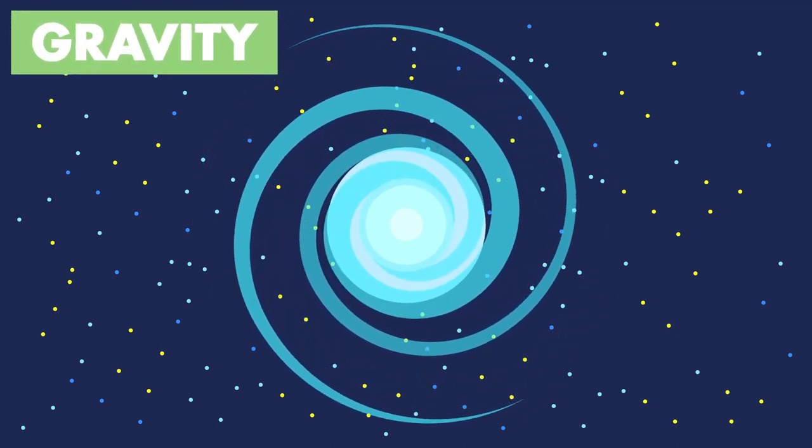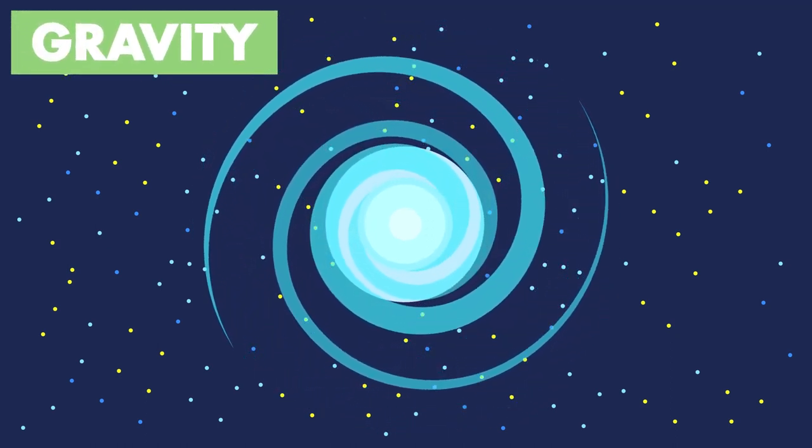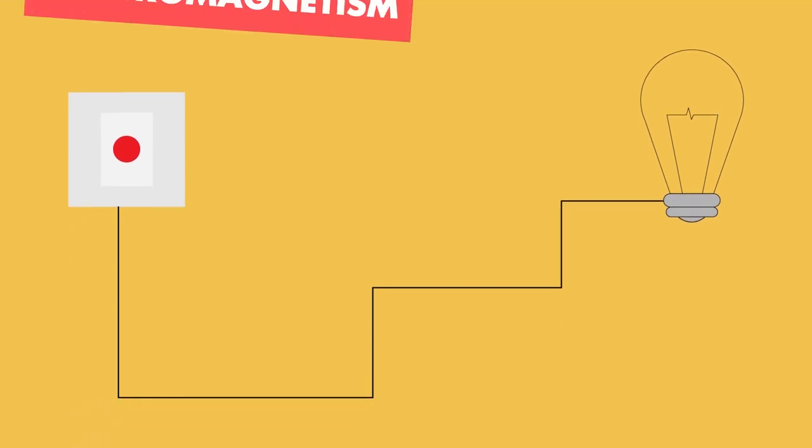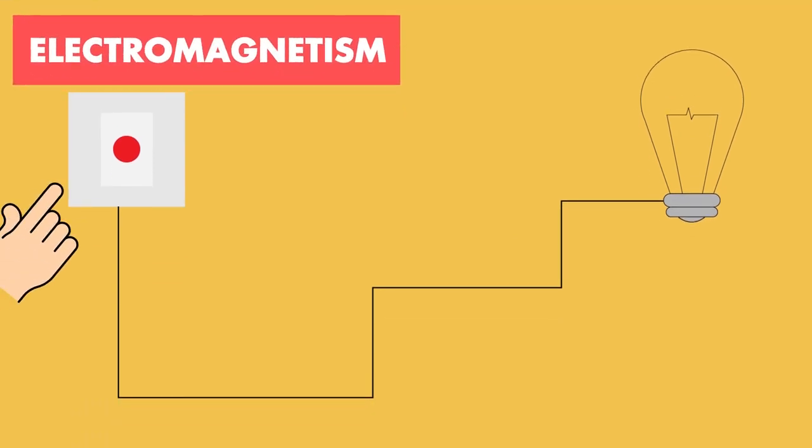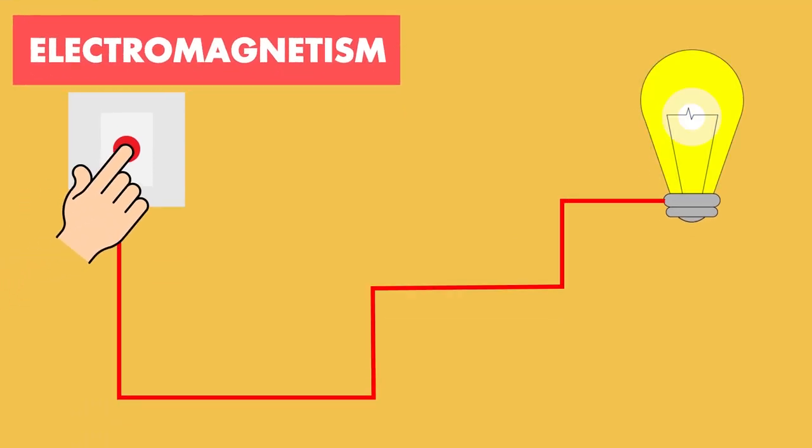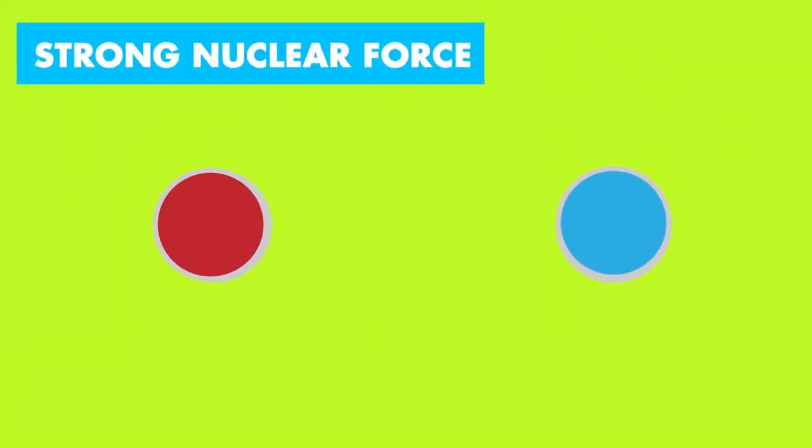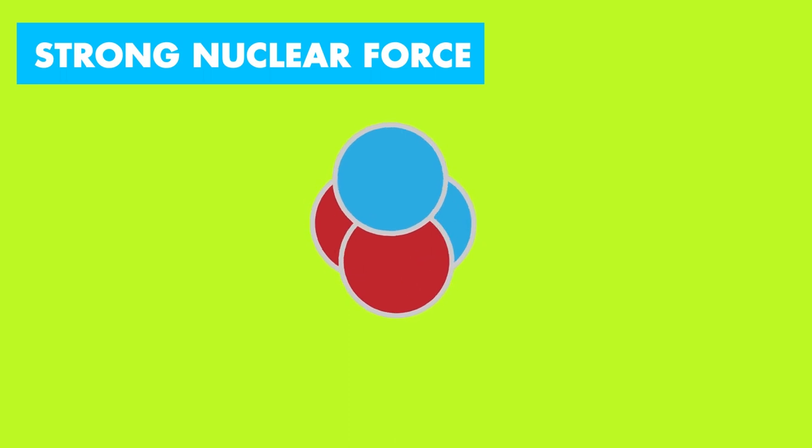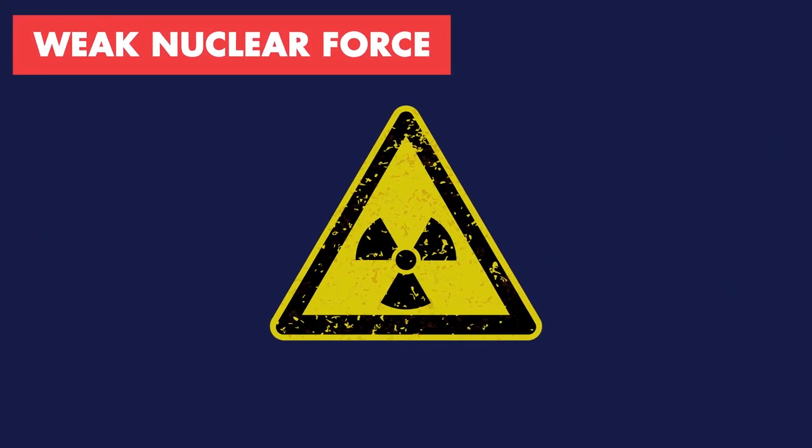1. Gravity, which pulls together large planets and stars and galaxies. 2. Electromagnetism, like sticking a balloon on the wall or what makes your batteries, TV and electric lighting work. 3. The strong nuclear force, which attaches protons and neutrons together in the atom. 4. The weak nuclear force, which is mostly involved in radioactivity.